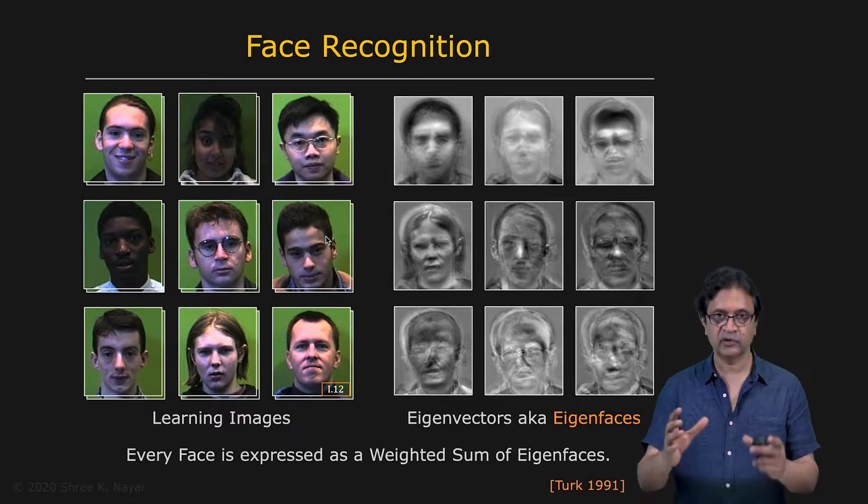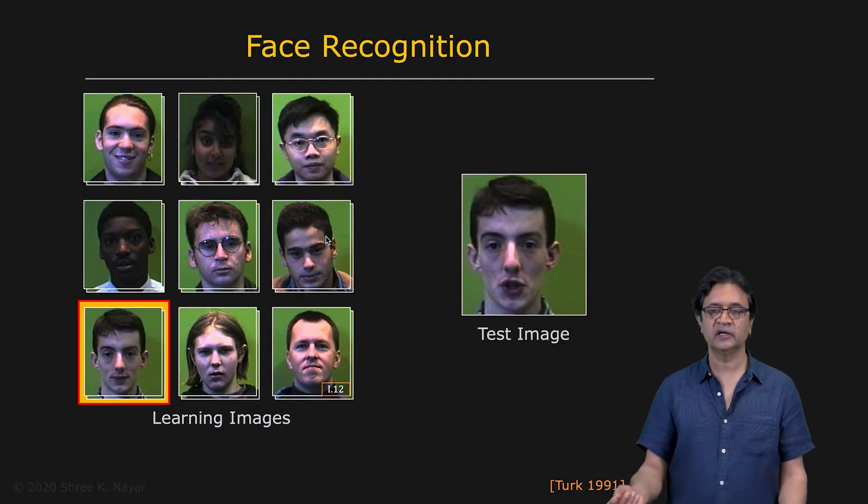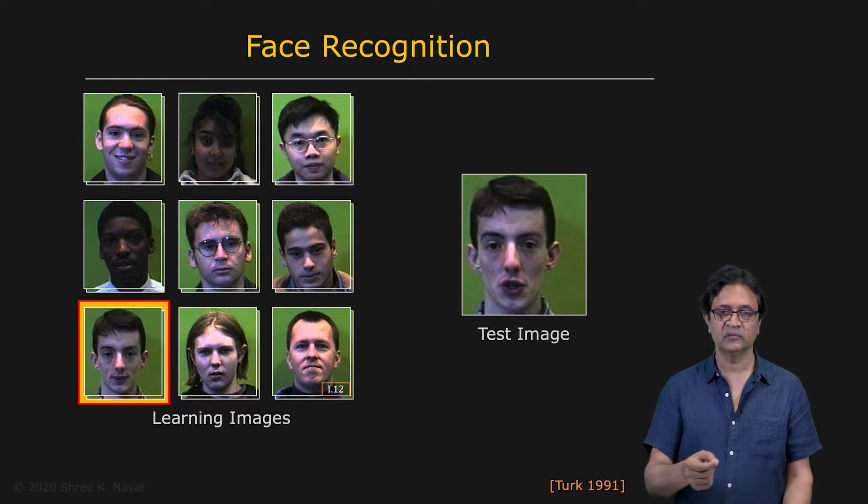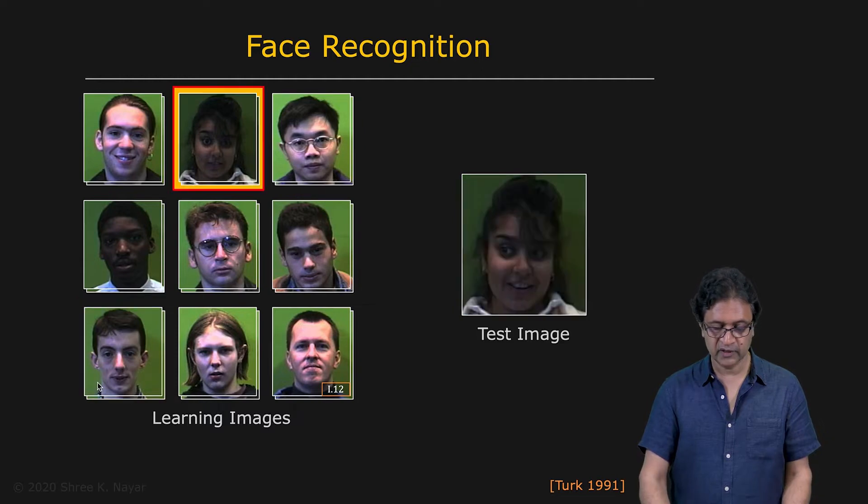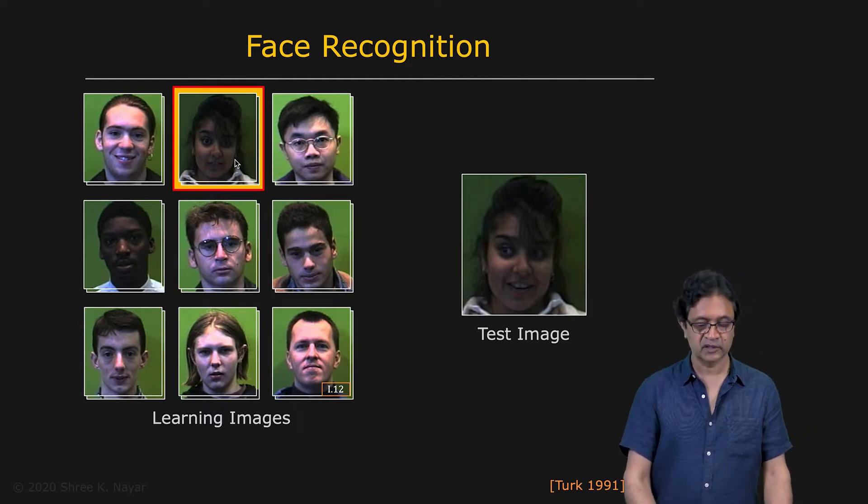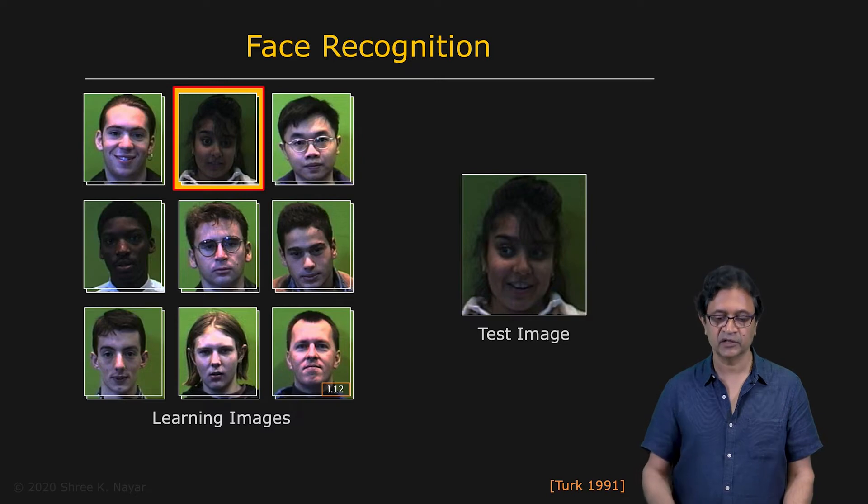So all of these images are points in this eigenspace. Now, if you're given a new image, you simply are finding the closest point match in your eigenspace by using a nearest neighbor algorithm. And in this case, it happens to be this image, which is the right person. In this case, even though the expression is different, it is this person, which is the result that you're looking for. So the use of eigenspaces for face recognition was one of the successful initial applications of appearance matching.